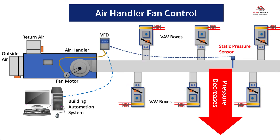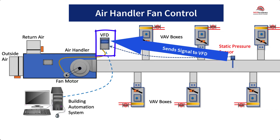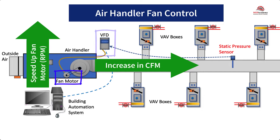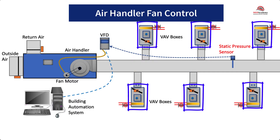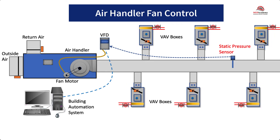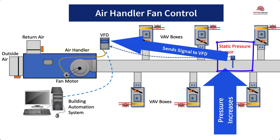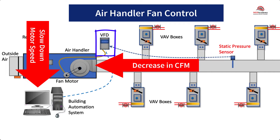As the variable air volume boxes begin to open their dampers because of an increase in cooling demand, the pressure in the supply duct drops. When the pressure in the supply air duct decreases, the static pressure sensor sends a signal to the variable frequency drive to increase the speed, the RPM, of the fan motor, causing an increase in CFM. The opposite happens when the VAV box dampers begin to close because the spaces are cold enough. As the dampers begin to close, the pressure in the supply air duct increases, causing the static pressure sensor to send a signal to the VFD to slow down the motor of the fan, reducing the amount of CFM.